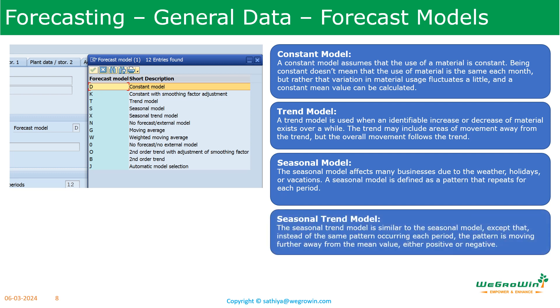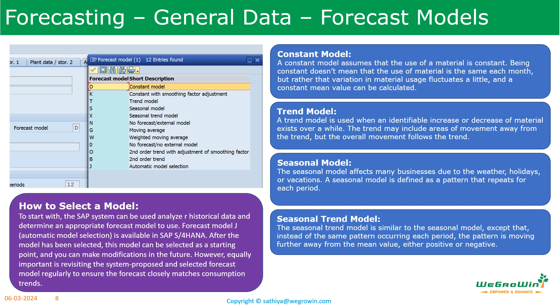The seasonal trend model is similar to the seasonal model, except that instead of the same pattern occurring each period, the pattern is moving further away from the mean value — either increasing or decreasing. For example, when the population or number of houses in a residential area is increasing, the demand for ice cream may increase summer on summer — that is a seasonal increasing trend. If you don't know how to select a model, you can use forecast model J — automatic model selection — which analyzes past details and suggests a model. However, you must regularly revisit the system-proposed model to ensure the forecast closely matches actual consumption.